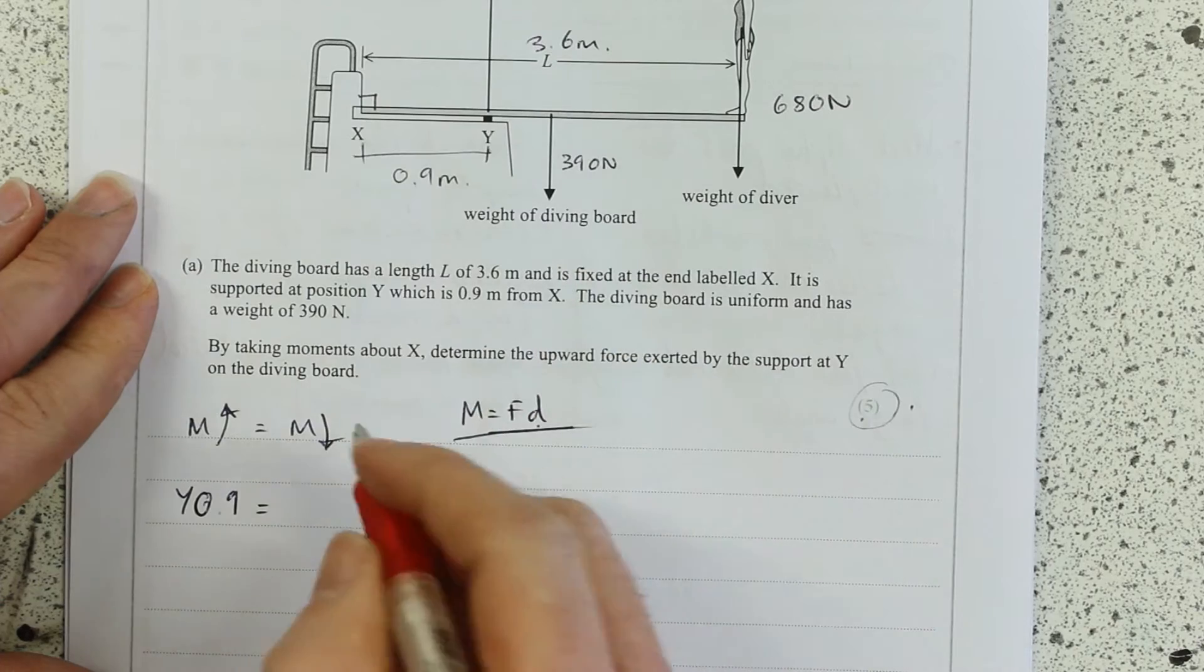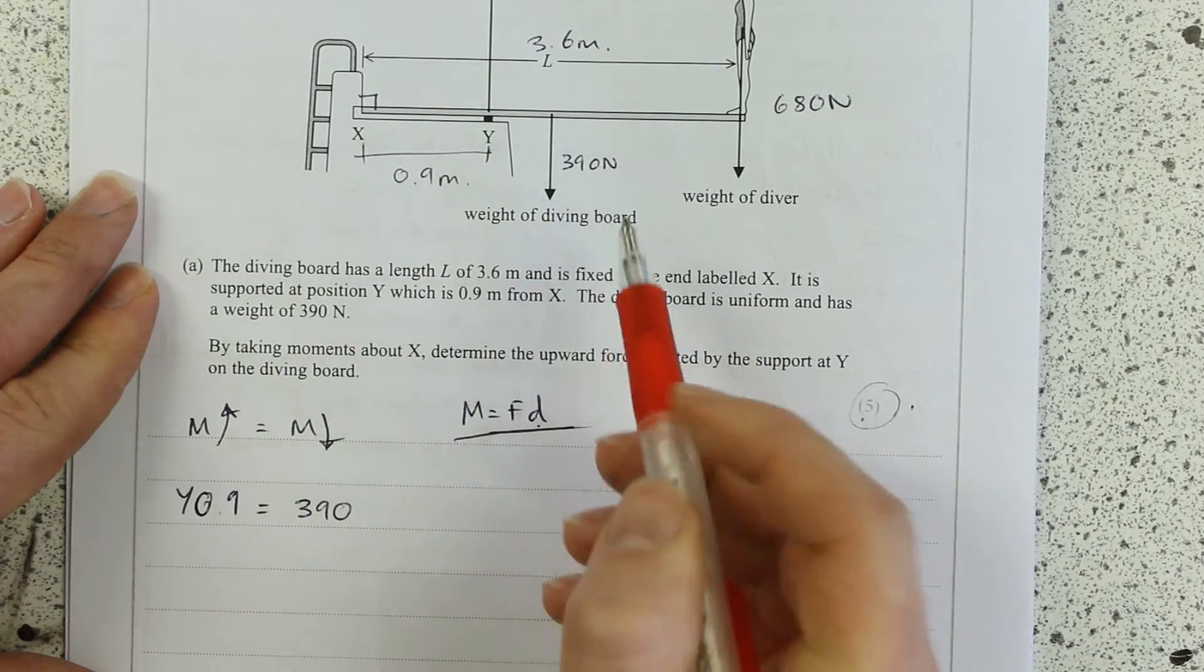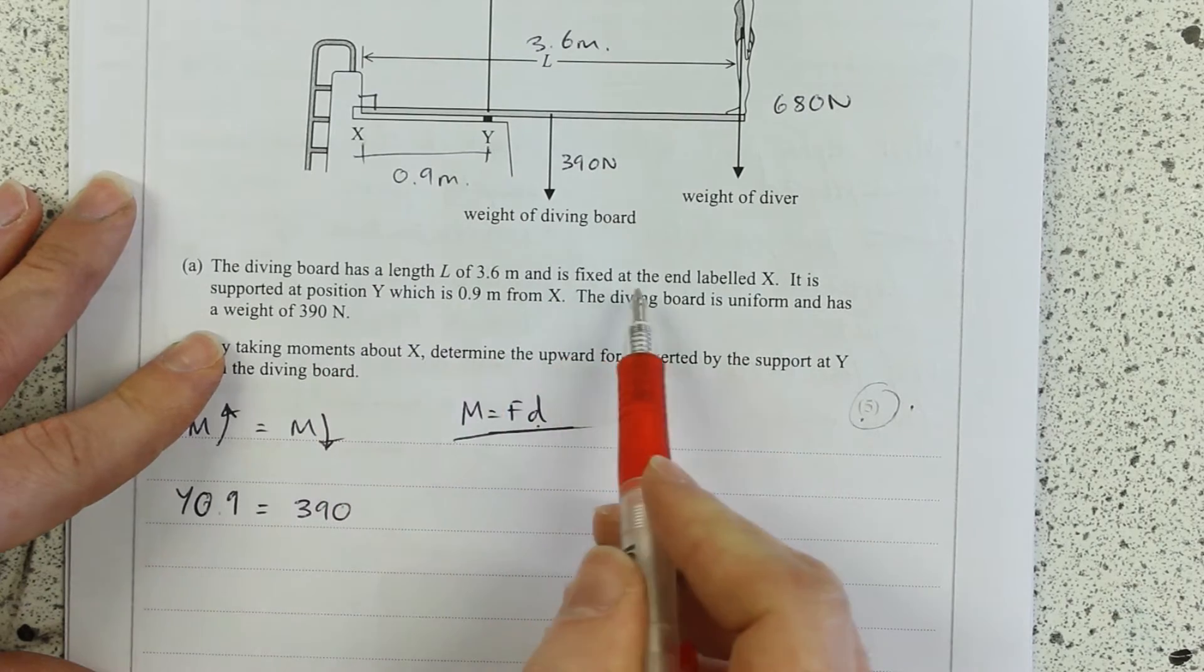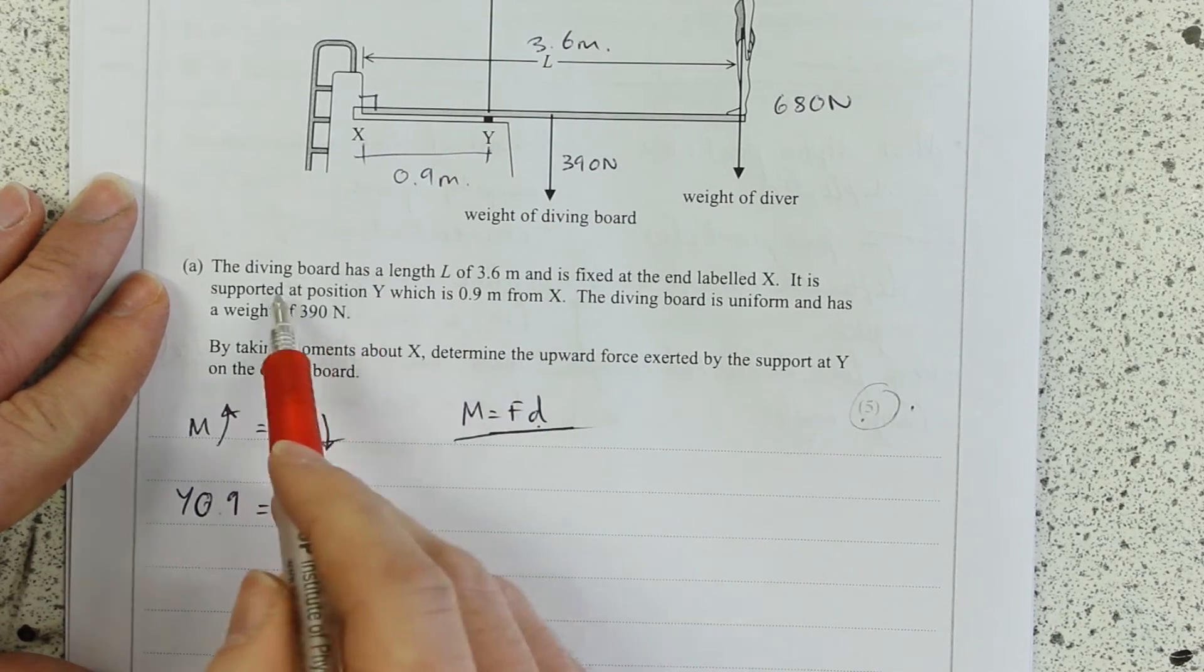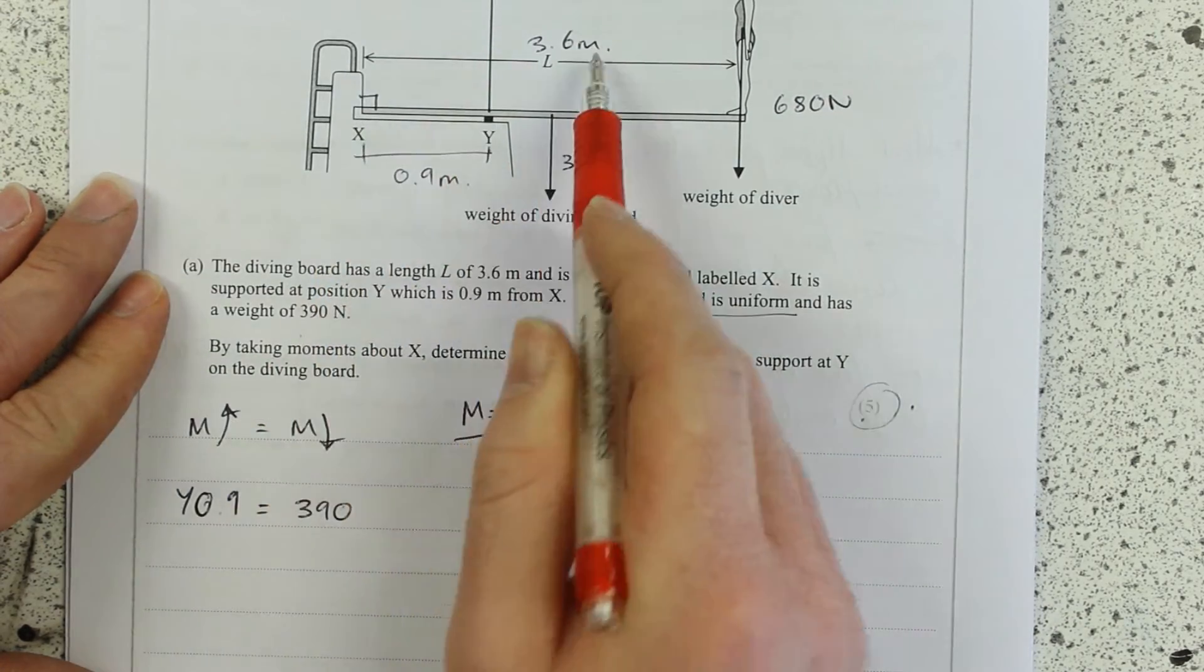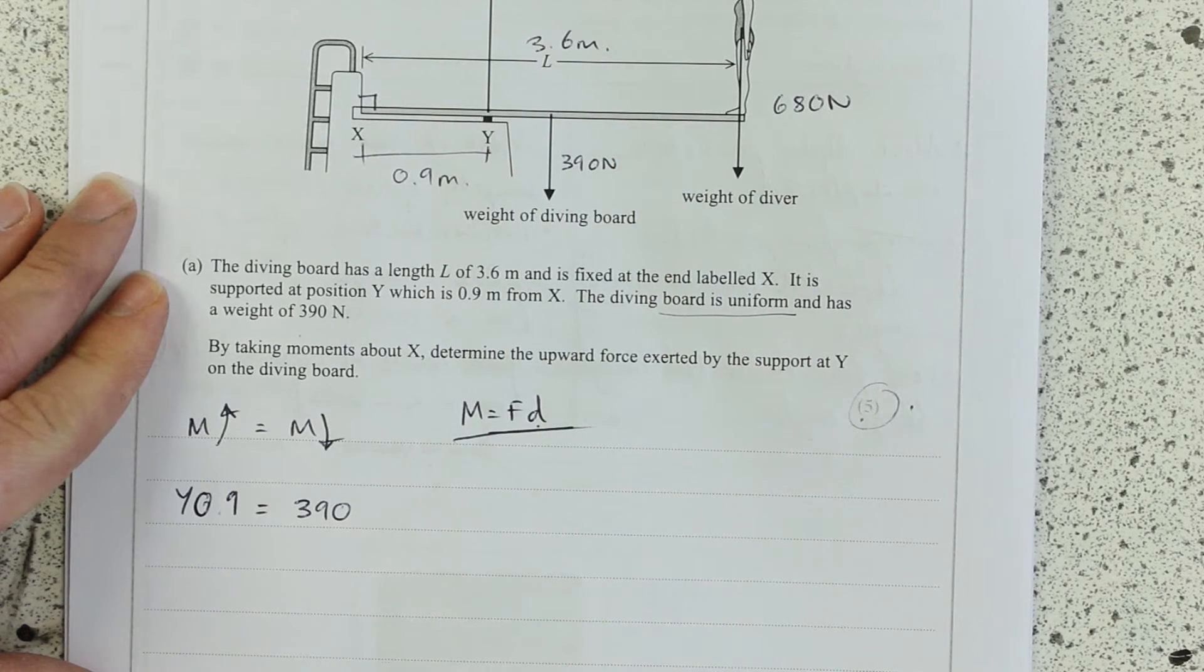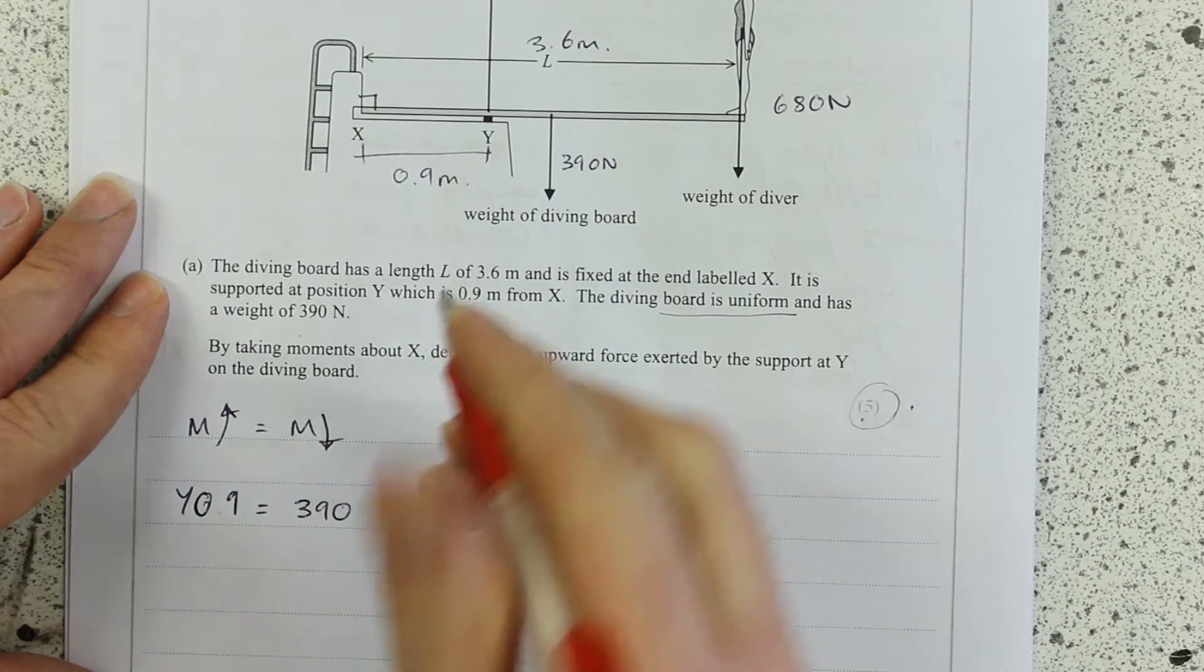And then what else have I got? First clockwise moment, 390 is the weight there. That's going to be, it's a uniform diving board we're told. Diving board is uniform, has a weight of that. So we know that's going to be halfway along the length. So 3.6 divided by 2 is 1.8.